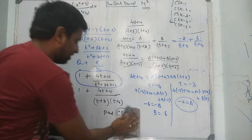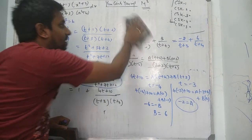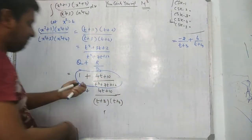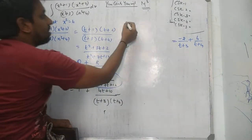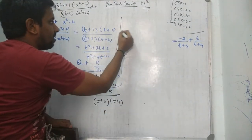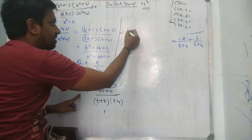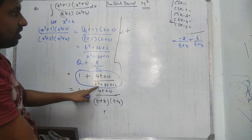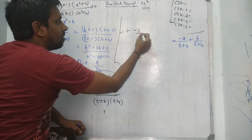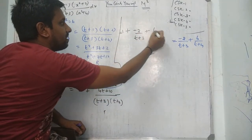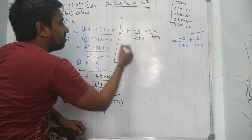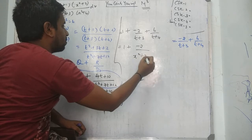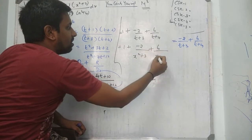I have wiped out and converted all fractions. Therefore finally: 1 minus 2 over (t + 3) plus 6 over (t + 4). Now replace t with x² — substitute x² back in place of t, and after that we integrate.